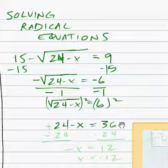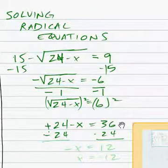And we'll subtract. That's positive 24. So we're going to subtract 24 from both sides, giving us negative x equals 12, so x equals negative 12.